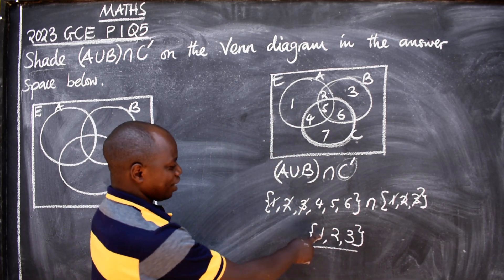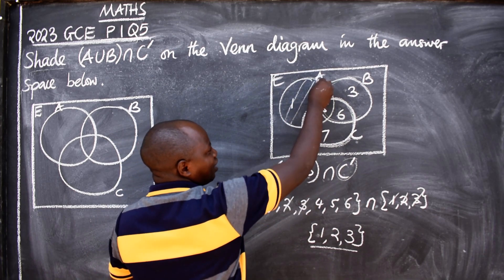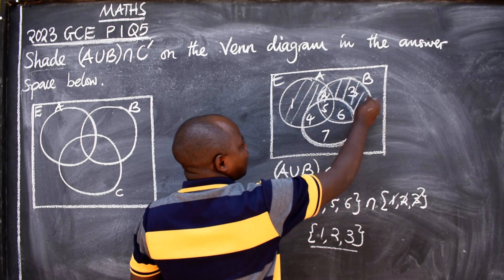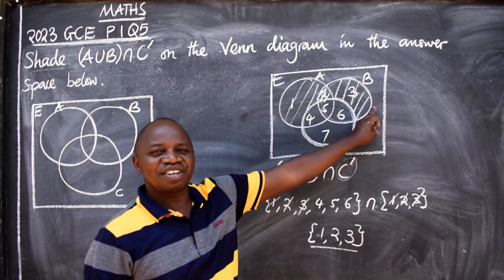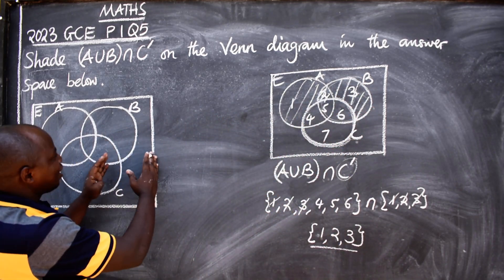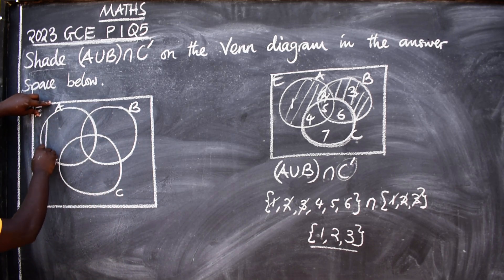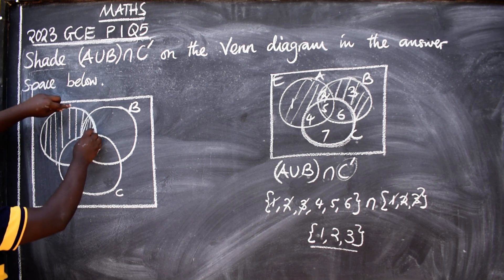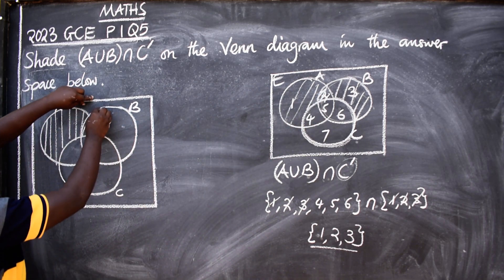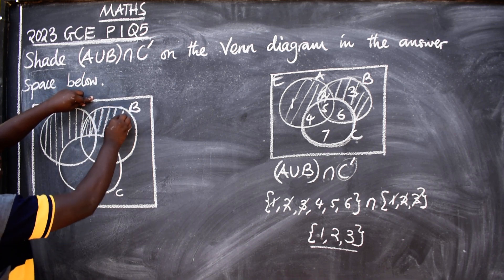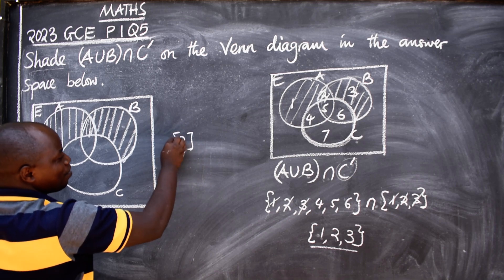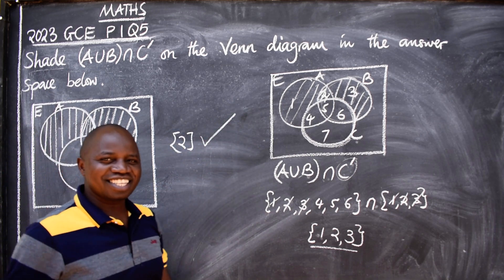Look at where 1 is on the original Venn diagram — I'll shade that region. Where is 2? There. Where is 3? There. Now I transfer this information to the original diagram. This part must be shaded, and also the other part — corresponding to where 1, 2, and 3 are located. Shade those regions and you get your full two marks, just like that.